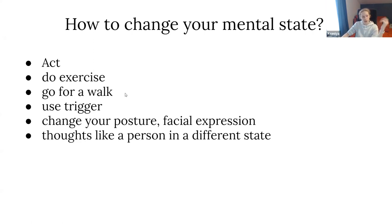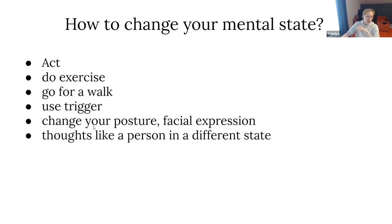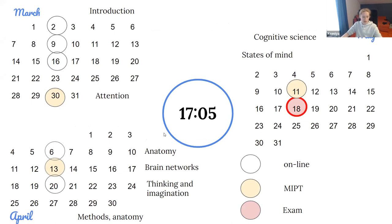For example, if a certain smell like bread was associated with happiness for you, smelling it again can make you happier. You can also change your posture or facial expression — when you smile, your mental state changes and you become happier. Or you can simply see someone else with a different mental state and use your mirror neurons to change your own mental state. That's all for today.